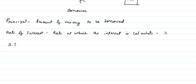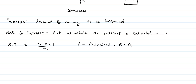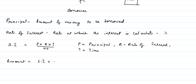Now we will see the formula of simple interest. Simple interest is equal to P into R into T divided by 100, where P is principal, R is rate of interest, and T is the time for which the money is borrowed. Amount is the sum of simple interest plus principal, so A is equal to SI plus principal.